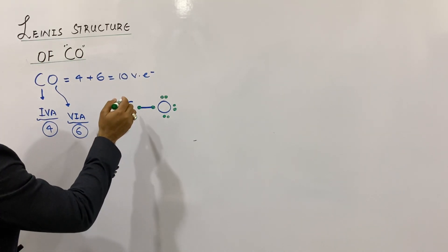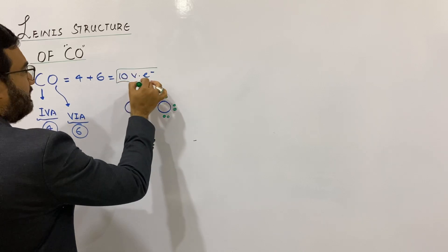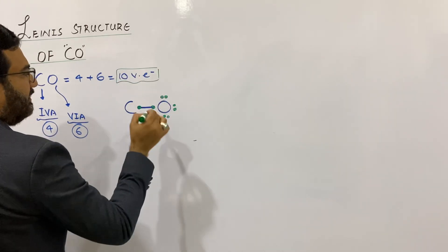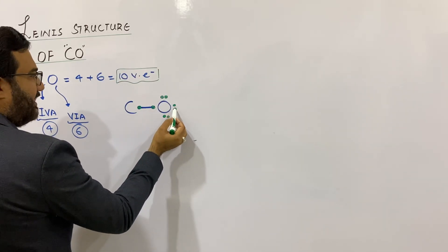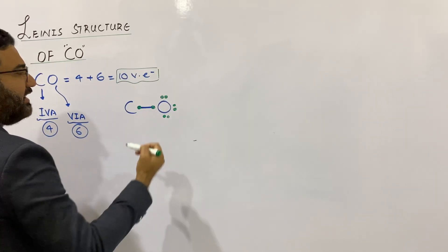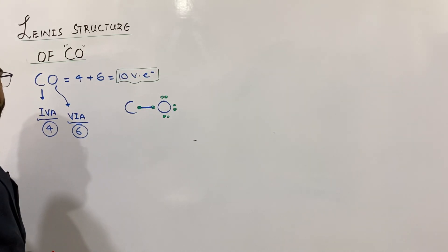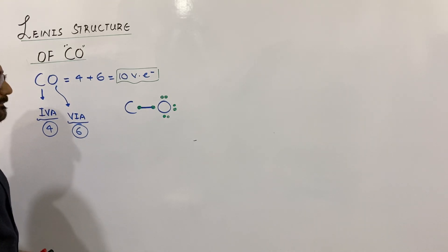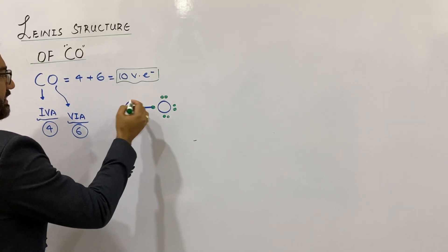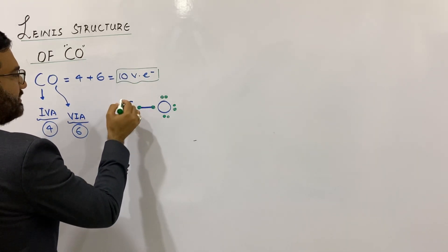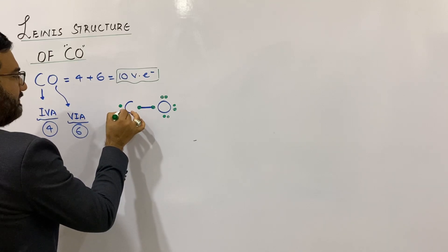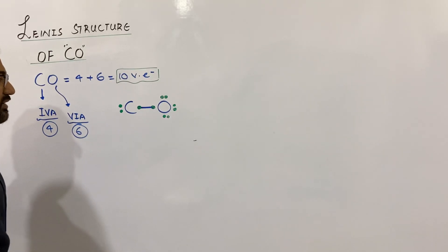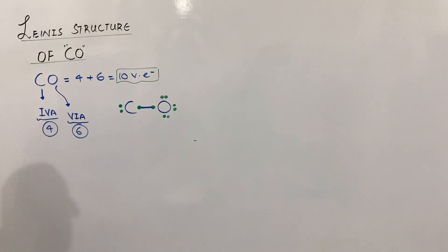We have a total of ten valence electrons. Eight electrons are used to complete the octet of oxygen, so 1 through 8. There are only two valence electrons remaining, and those will be given to carbon in the form of one lone pair of electrons.